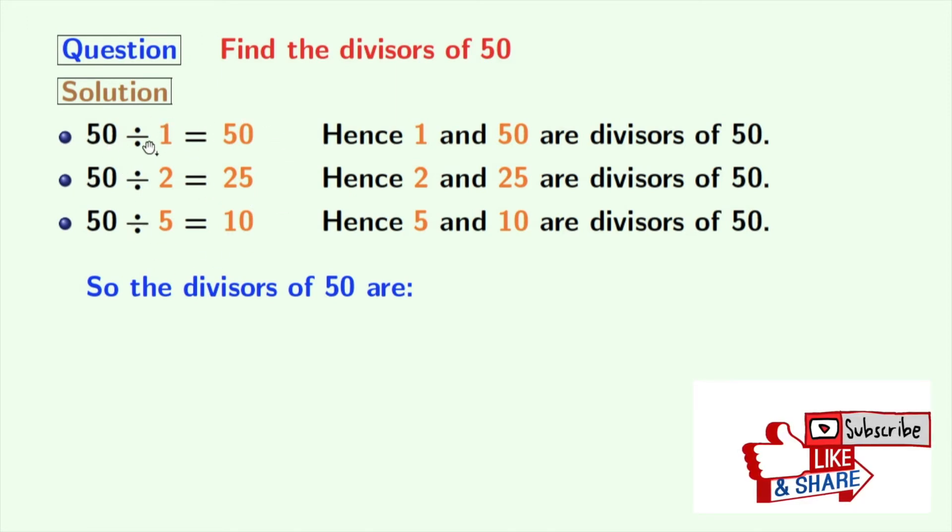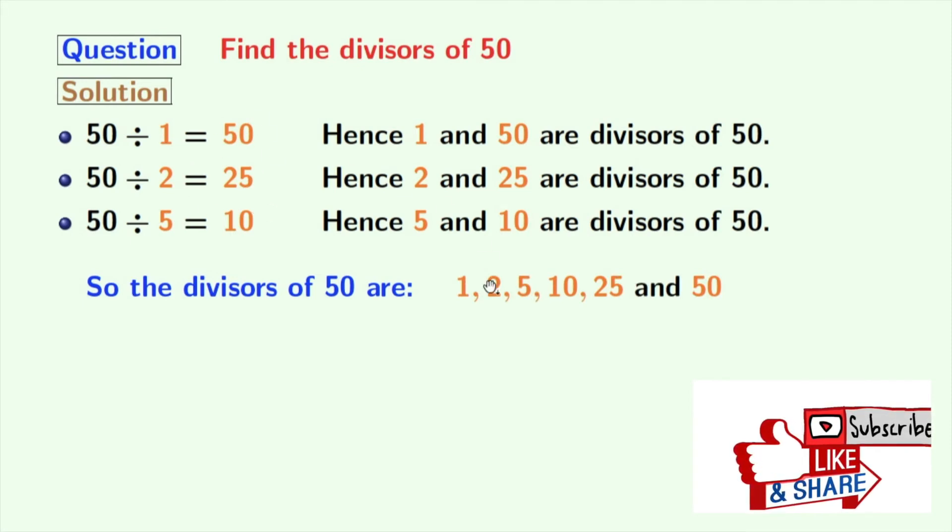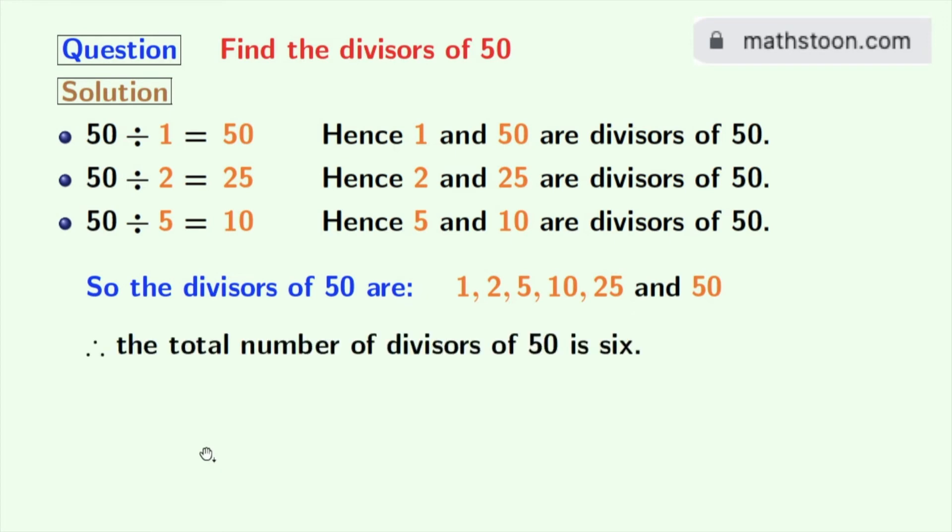These are 1, 2, 5, 10, 25 and 50. So the total number of divisors of 50 is 6.